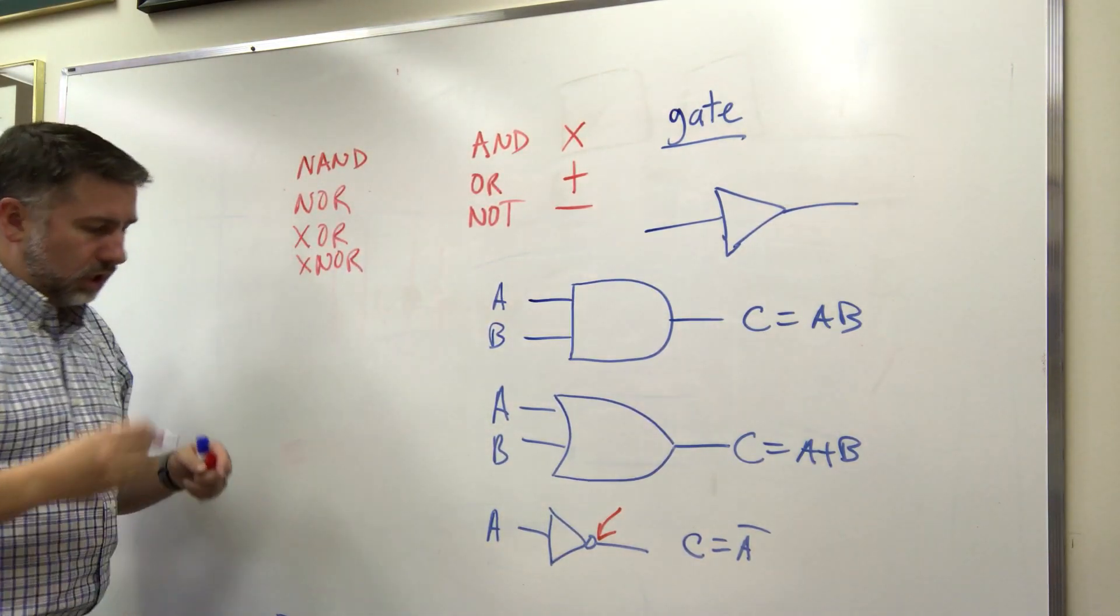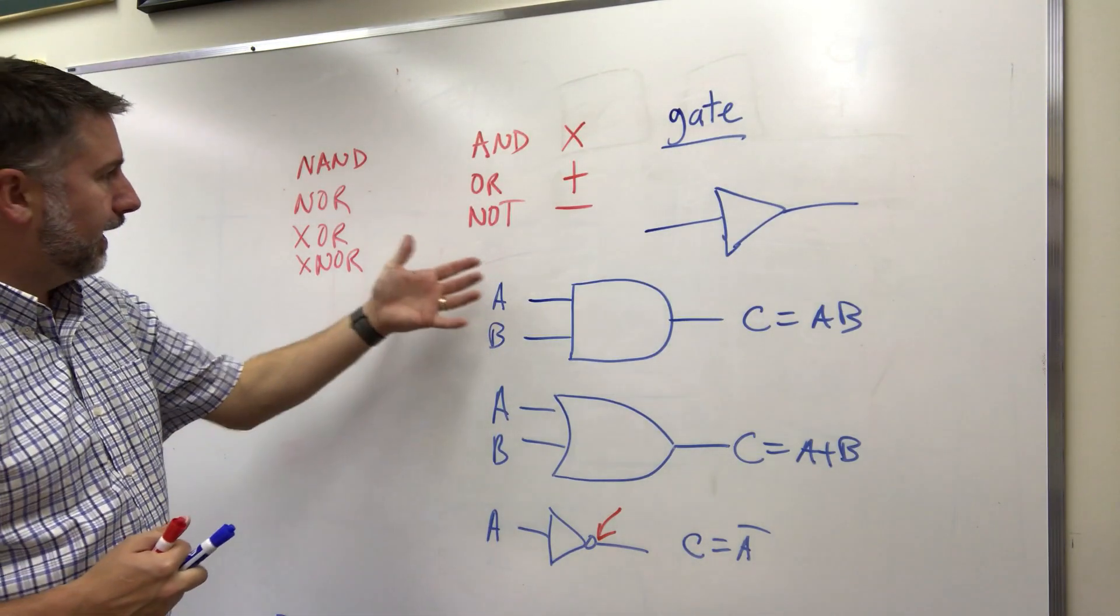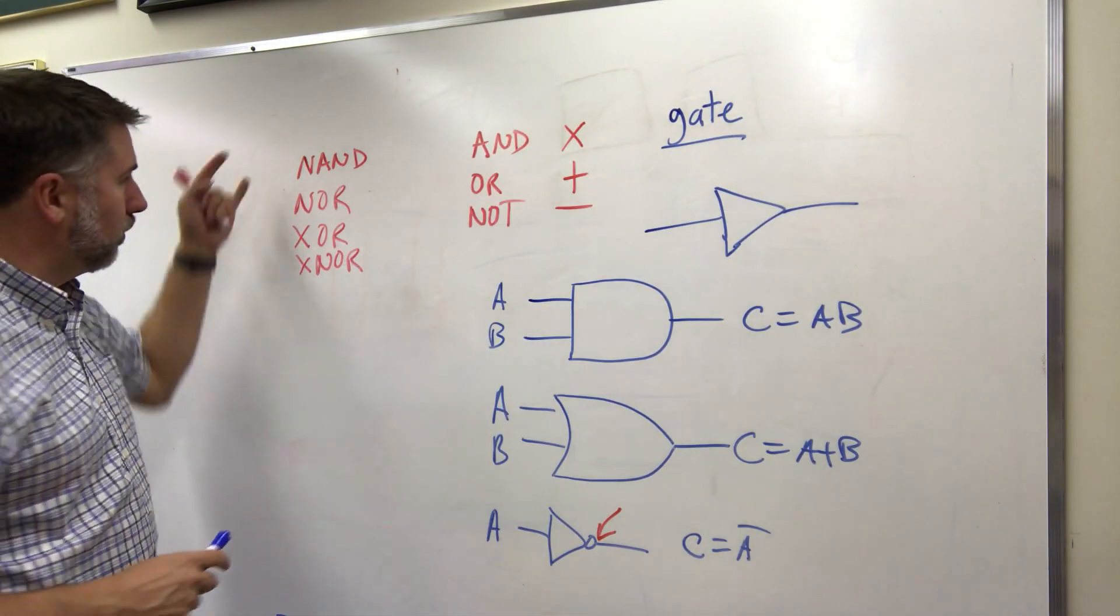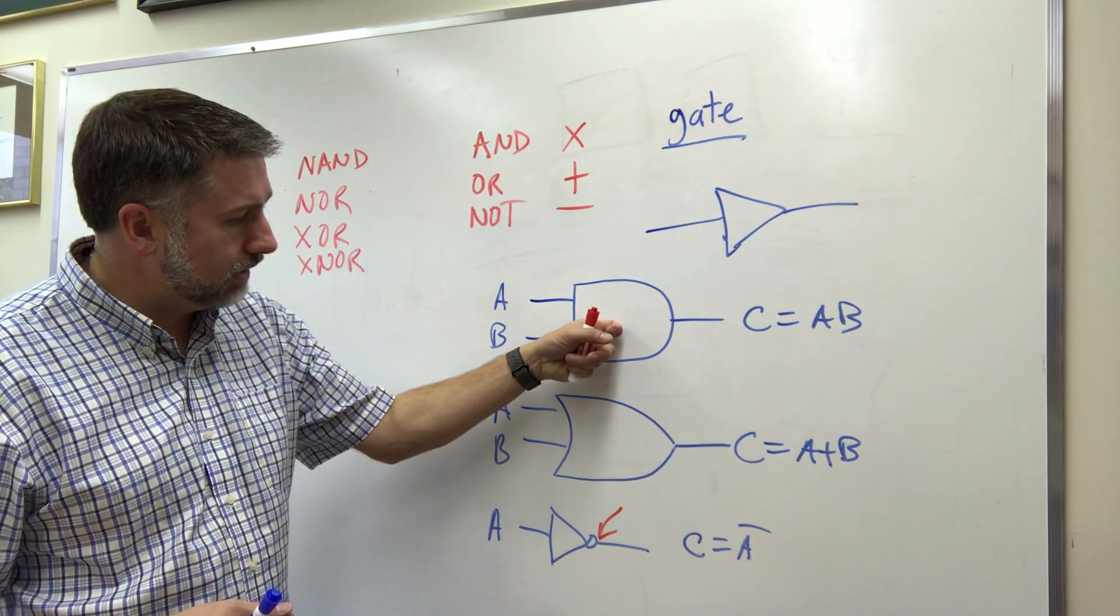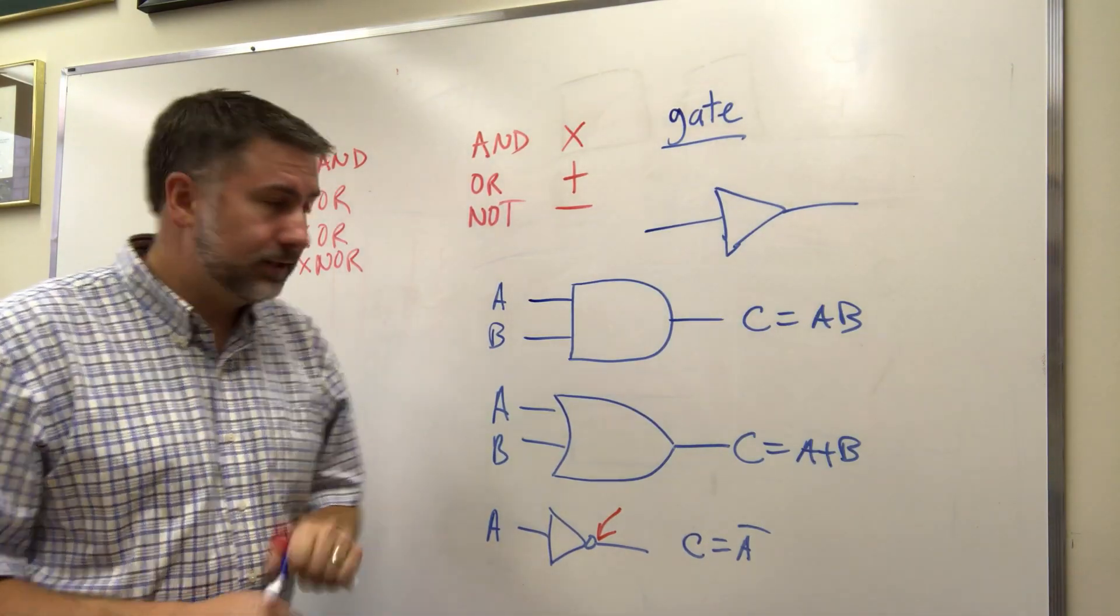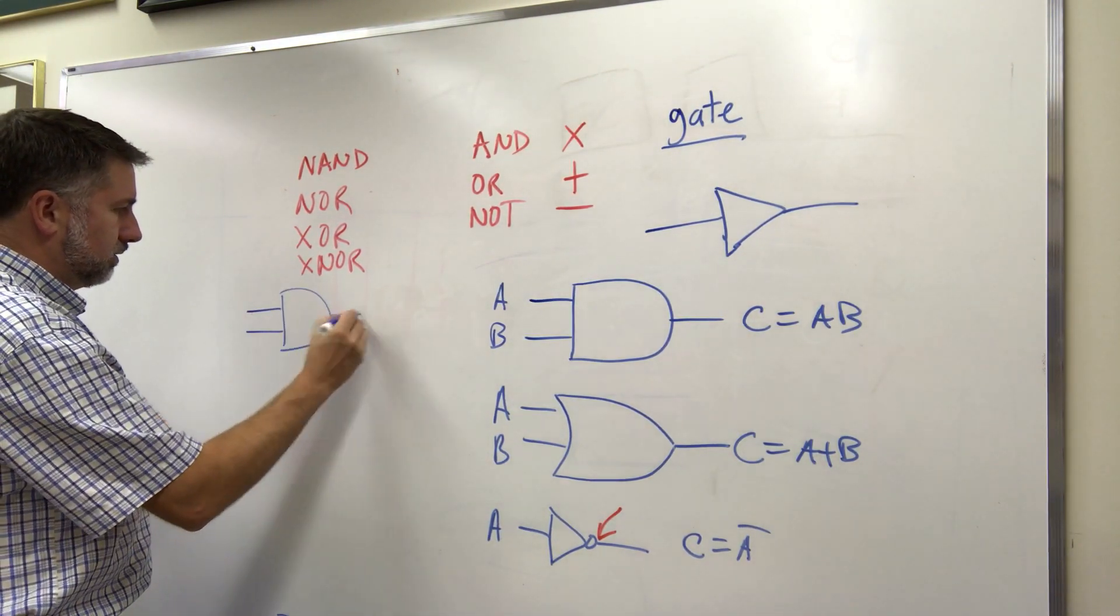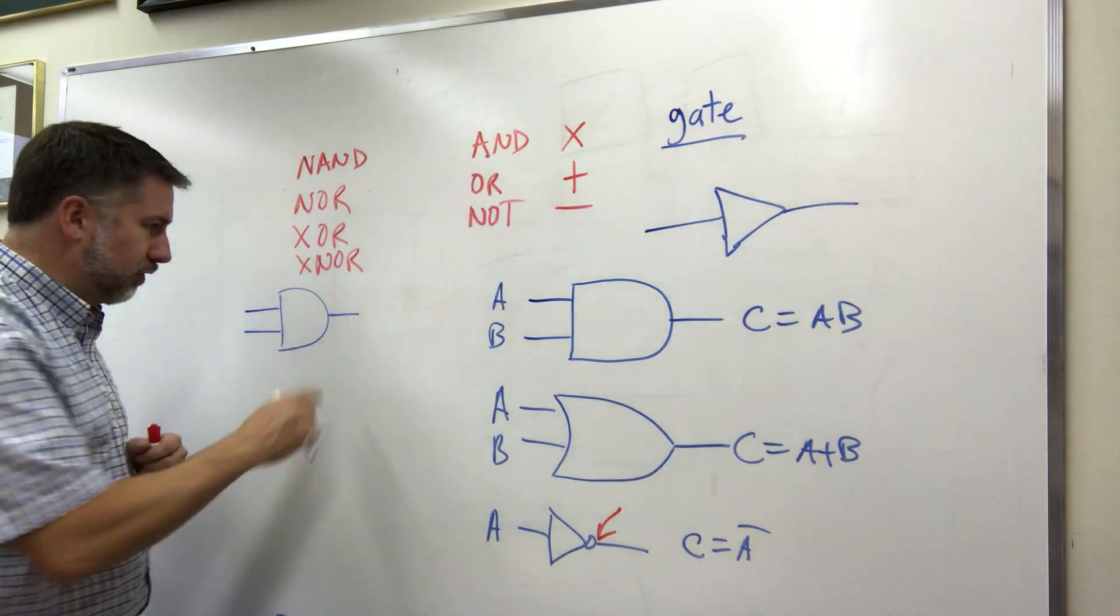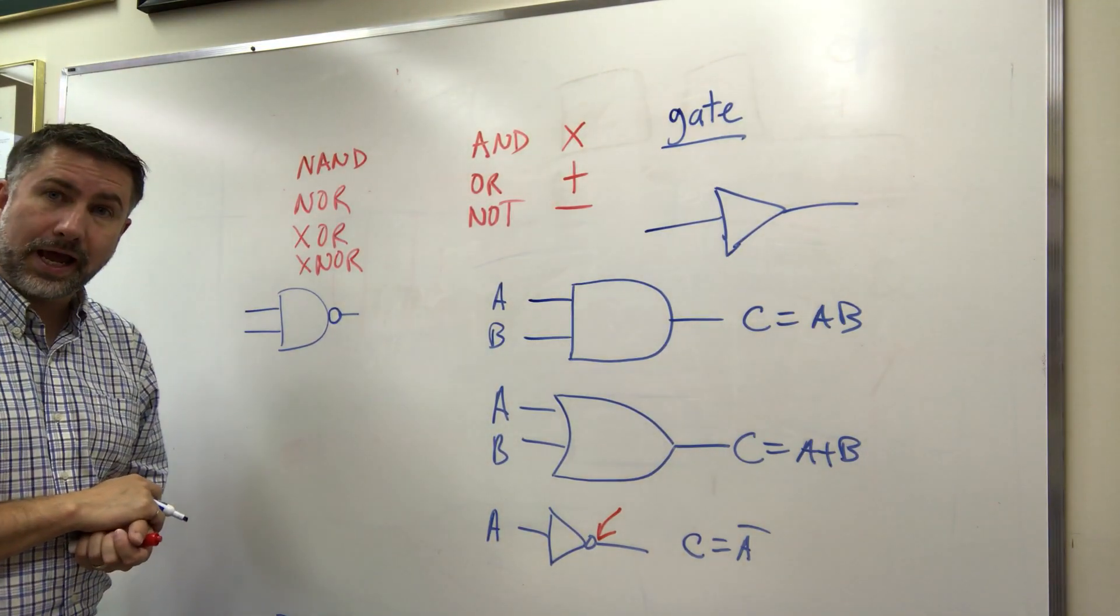These are less commonly used but we will use them a fair amount and the symbols for NAND and NOR should be reasonably intuitive knowing what you know about what AND looks like and what NOT looks like. Now a NAND looks like this, but then we have to invert it. This is AND. To invert it we just put a dot right at the output like that. So that's NAND.